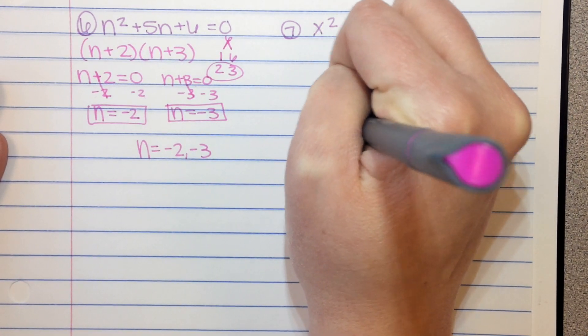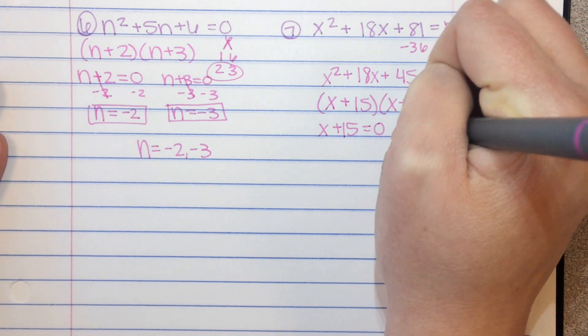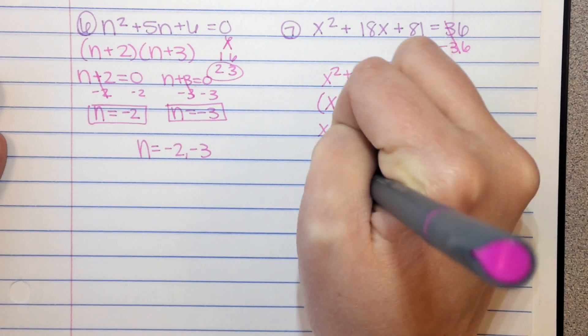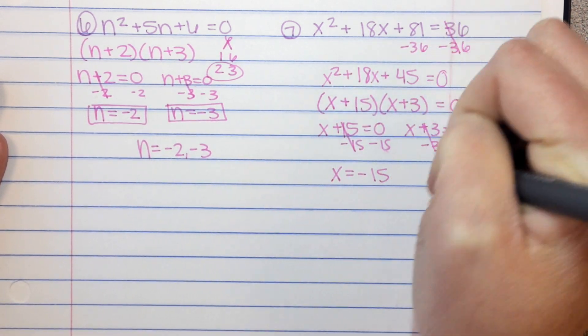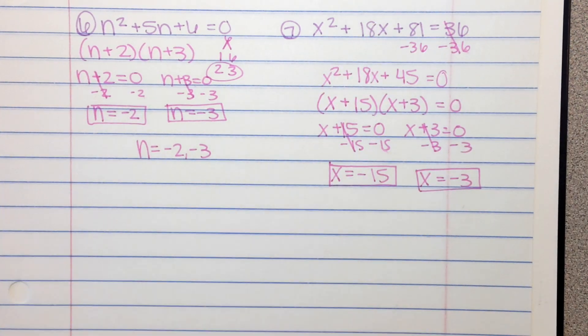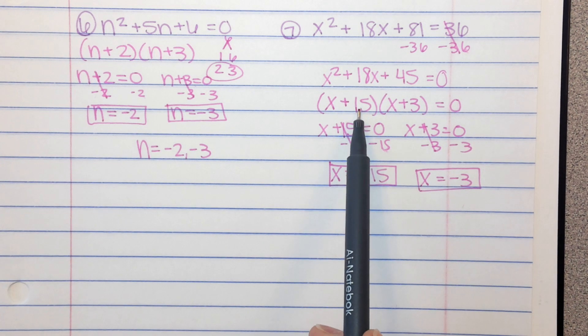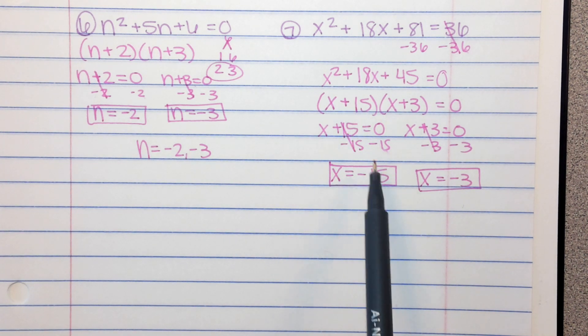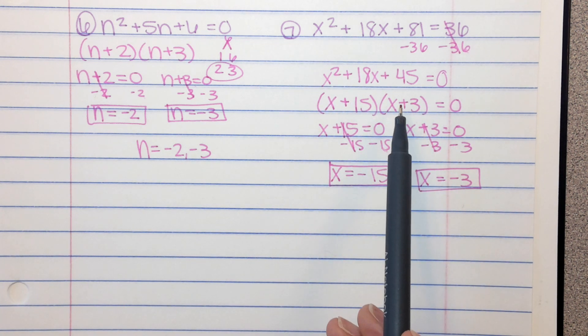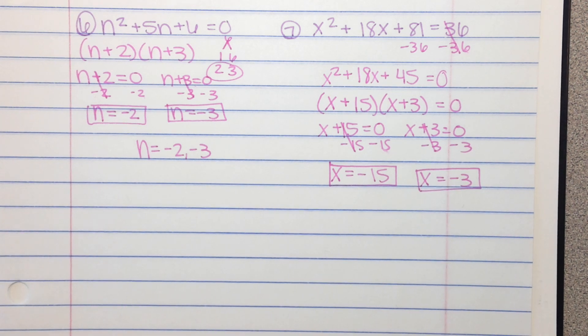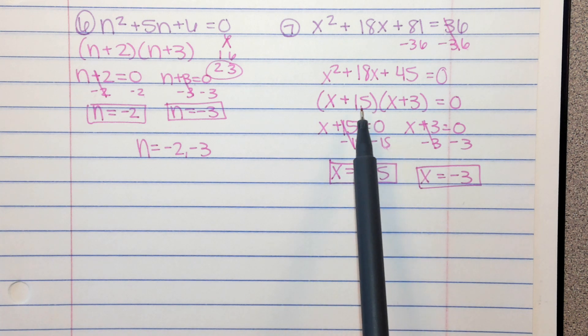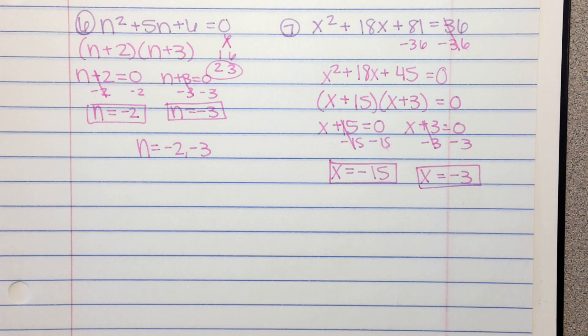Set each of those equal to 0 and solve. And what you might notice is when you set it equal to 0, it's the opposite of what it looks like. So it's a plus 15 here. Well, the solution is negative 15. It's a positive 3 here. The solution is negative 3. So that could be a little shortcut that will help you skip this step of solving those little one-step equations, or you can solve those in your head, and that's fine, and you'll still get the same answer.